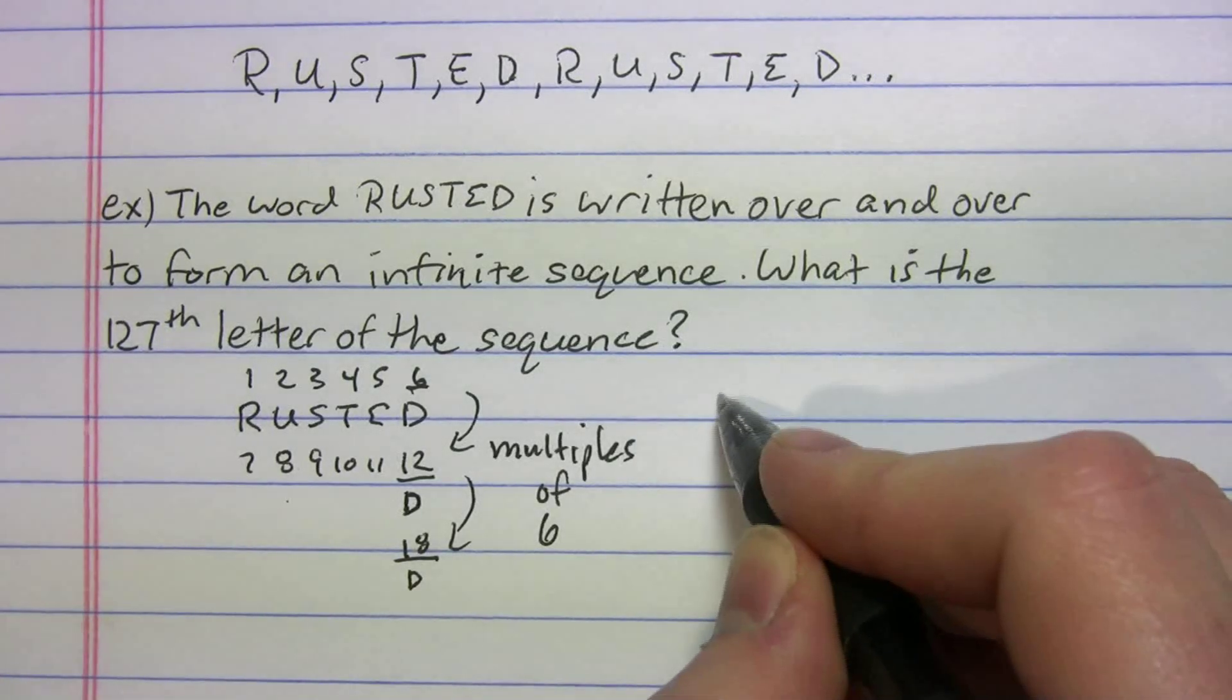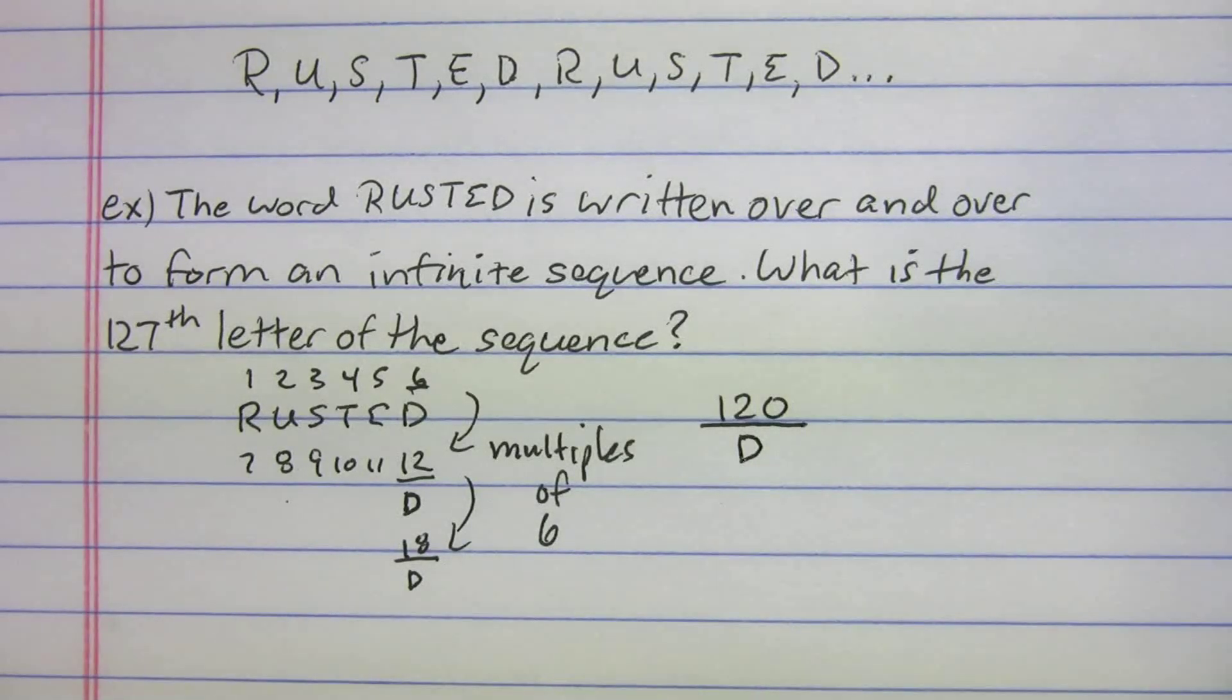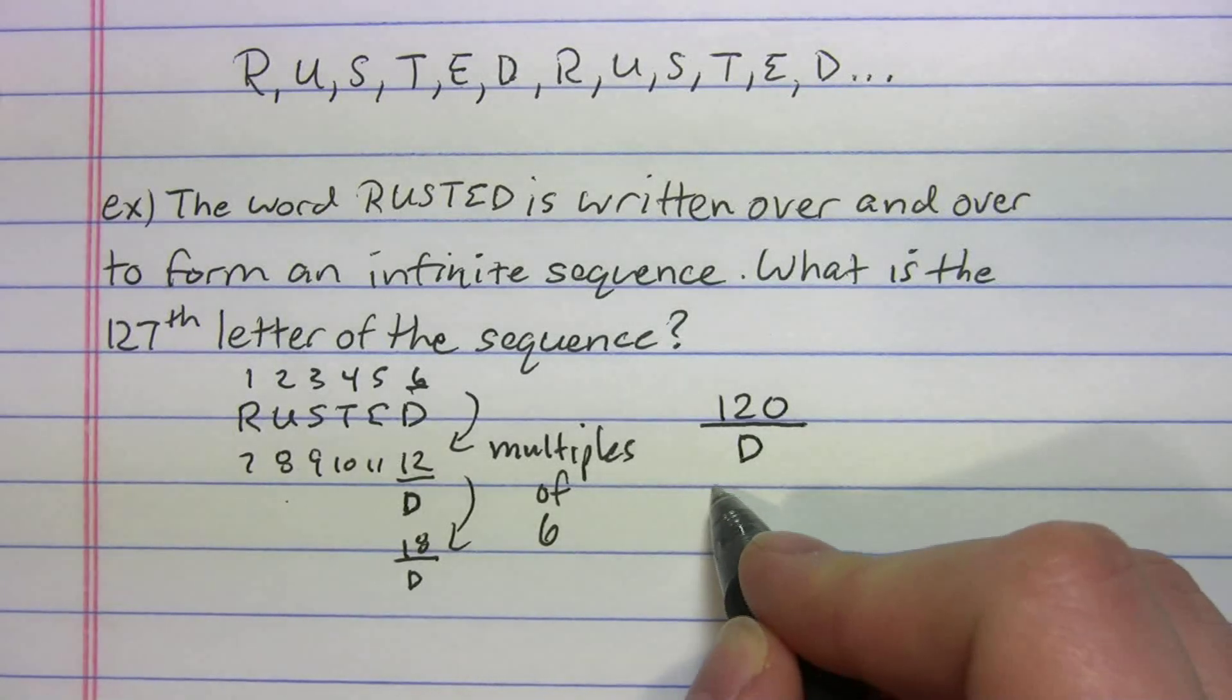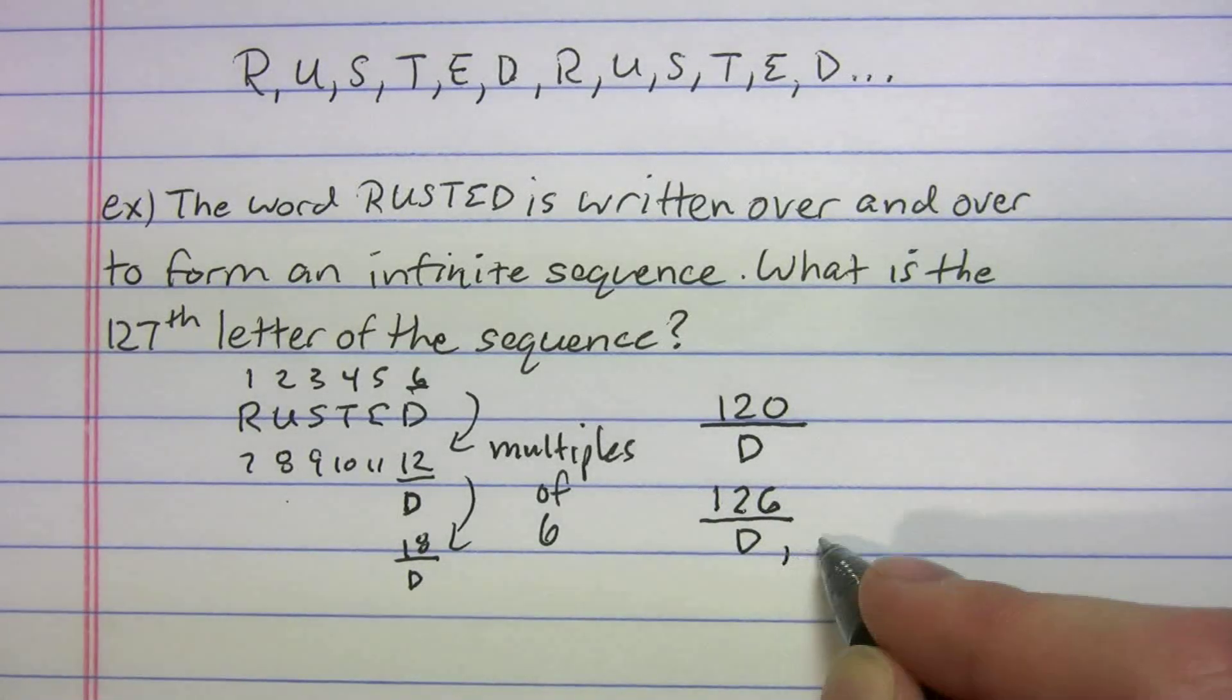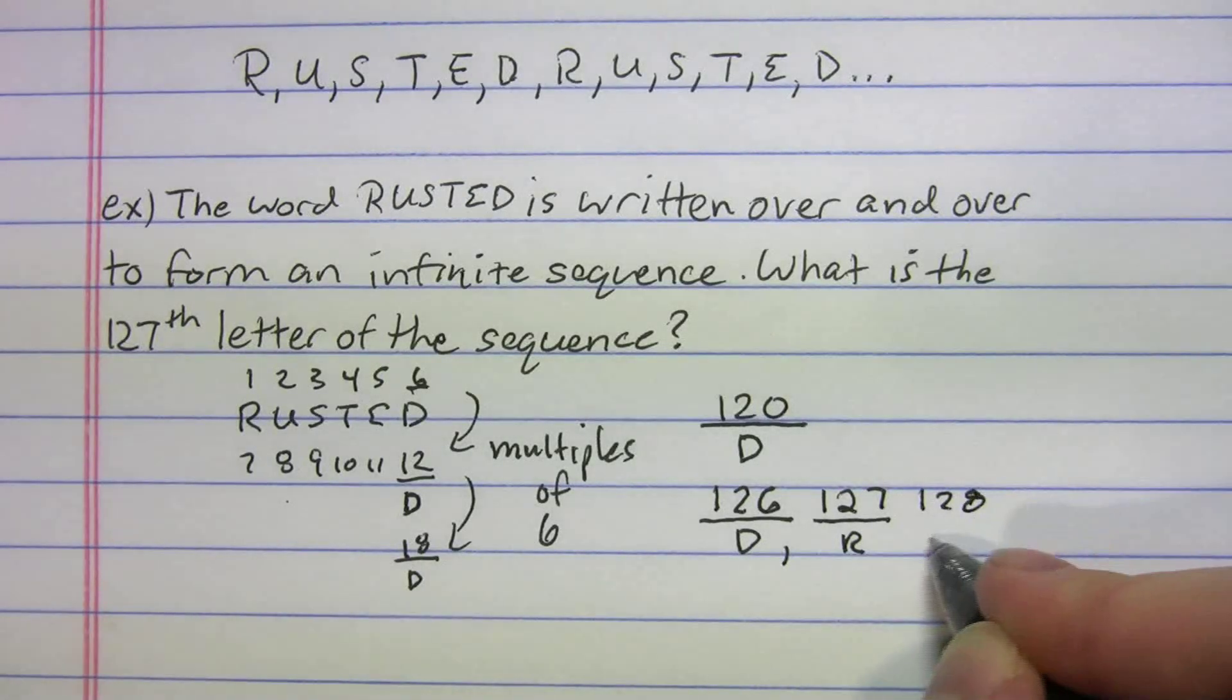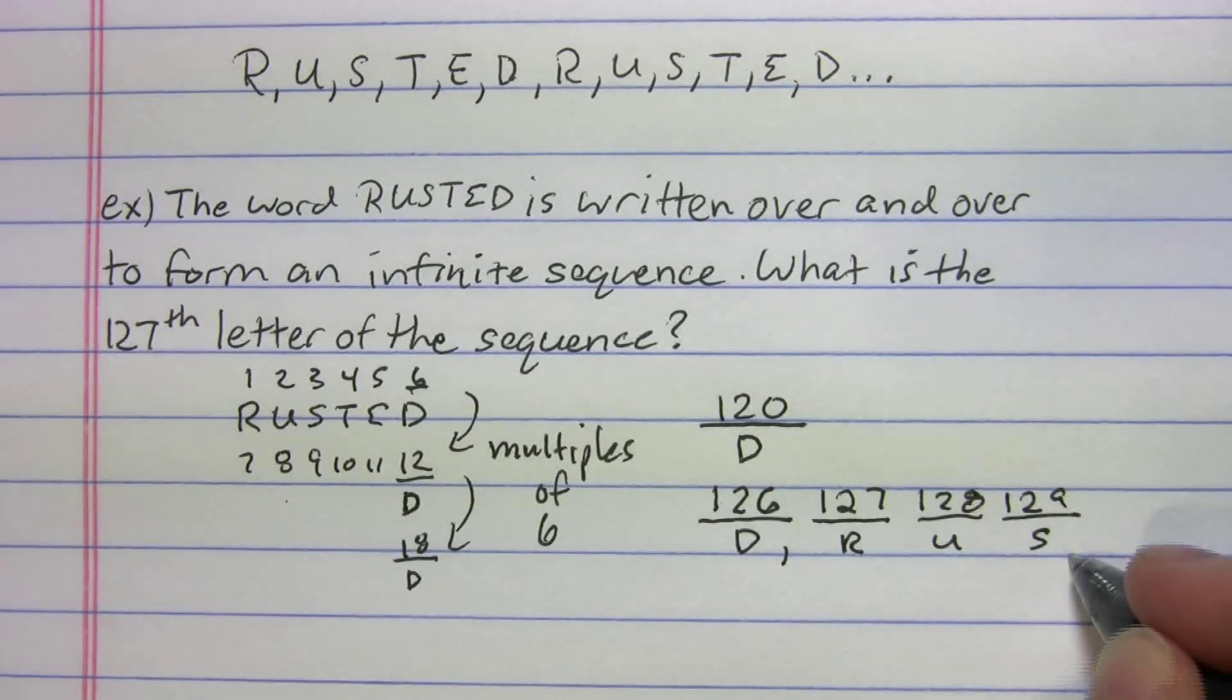We're really close to 127. Let's add six more. If I go to the 126 spot, that should also be a D, right? So now if I'm at the 126 spot and that's a D, what's the next letter? 127 is going to be an R, because this thing just goes 128 U, 129 S, and so on.